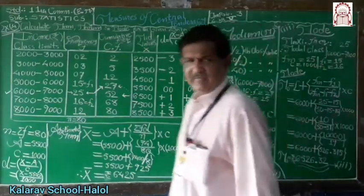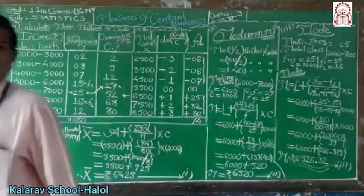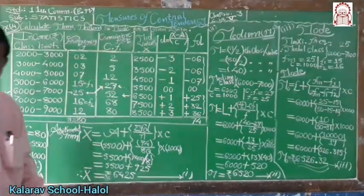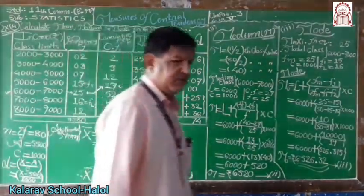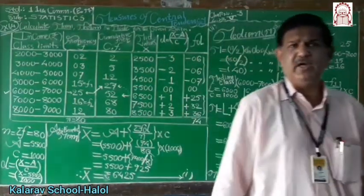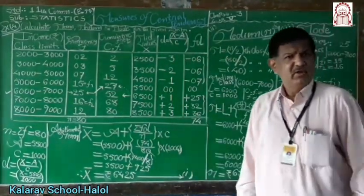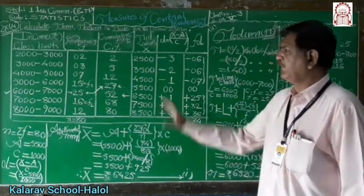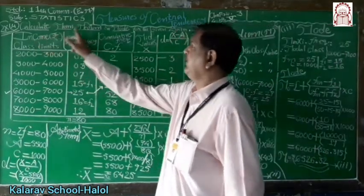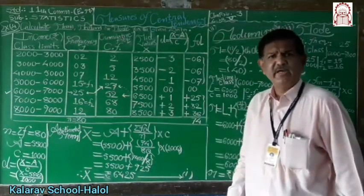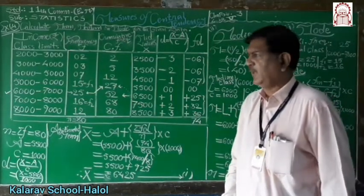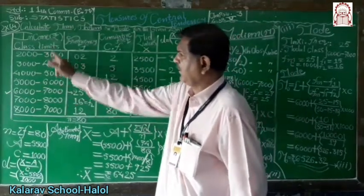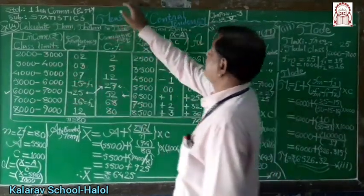Hello, good morning everyone. Chapter number 3, that is Measures of Central Tendency, in which today we are going to see a very important method — continuous type frequency distribution — to calculate mean, median and mode for the following data. Class and frequency: income group and frequencies are given to us.